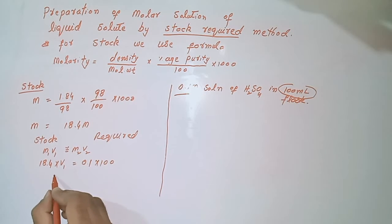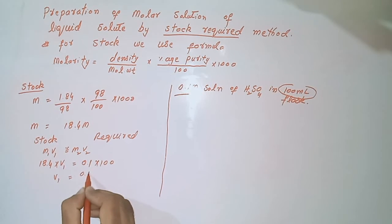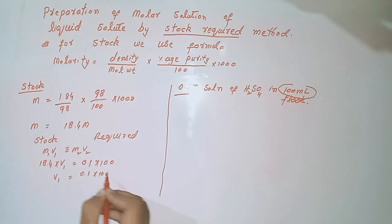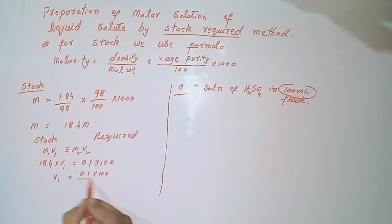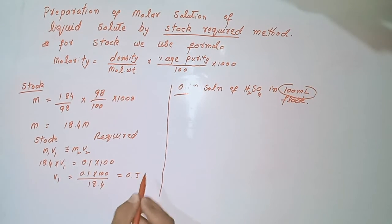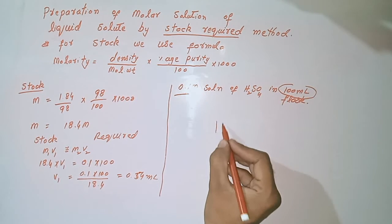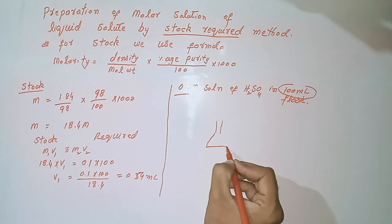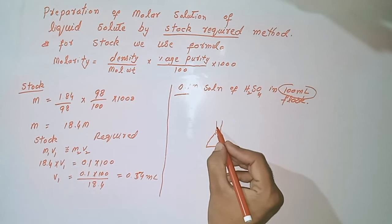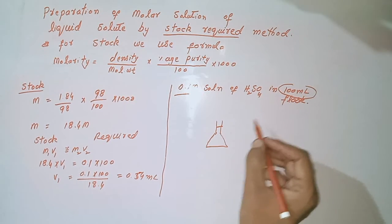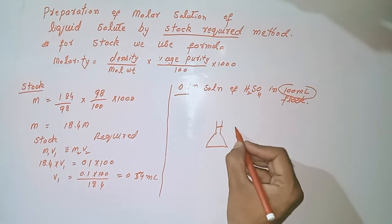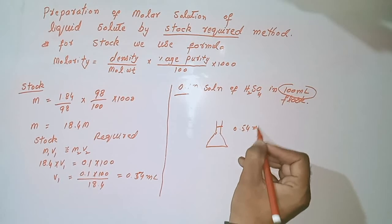Solving for V₁, we divide both sides, giving V₁ equal to 0.54 ml. Now we will take a 100 ml flask and add 0.54 ml of sulfuric acid into it.